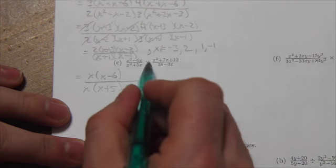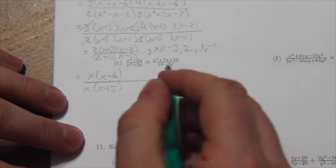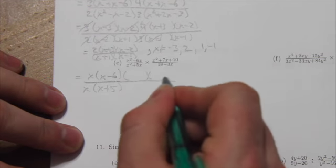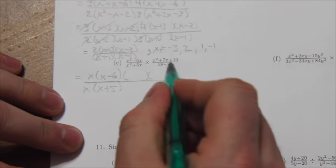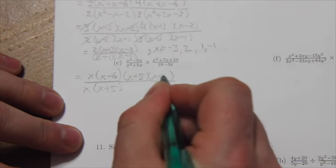Again, this is multiplication. So instead of writing that I'm multiplying them by using the cross there, I'm just going to bring the terms over. So factors of 10 that add to 7 will be x plus 5, x plus 2.